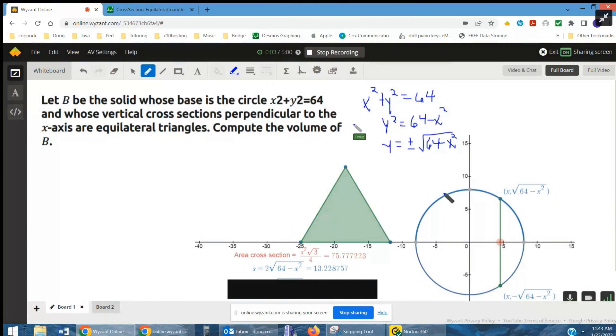Okay, you're given this circle, x squared plus y squared equals 64, which is a circle with center at the origin, radius 8.